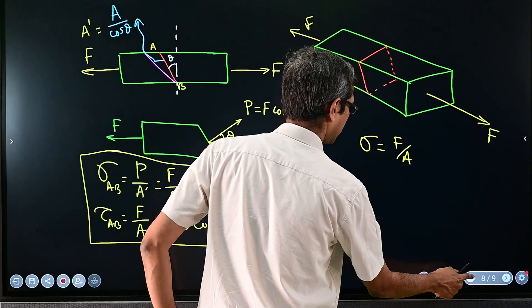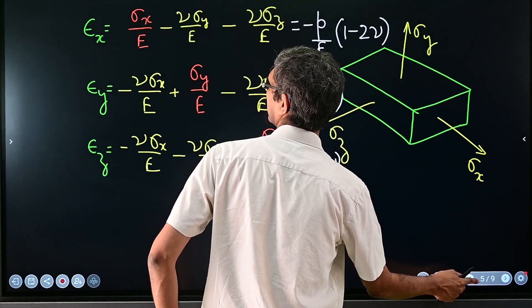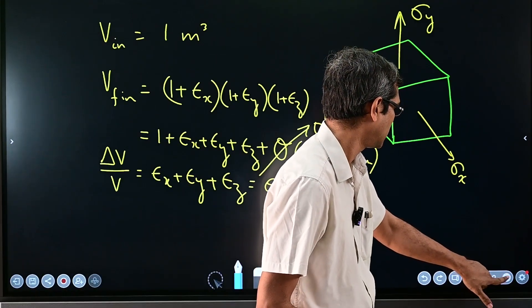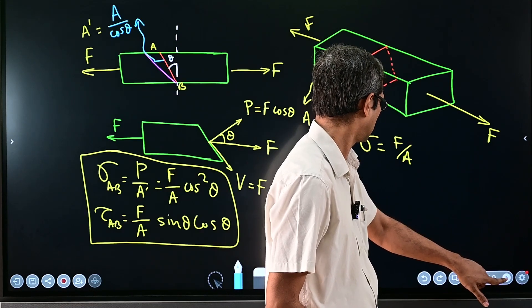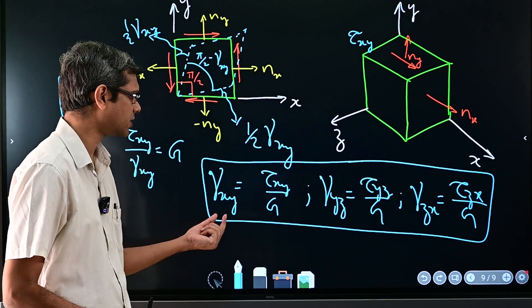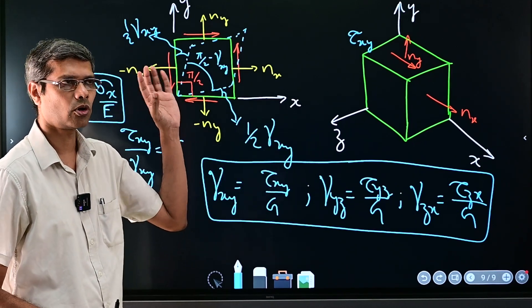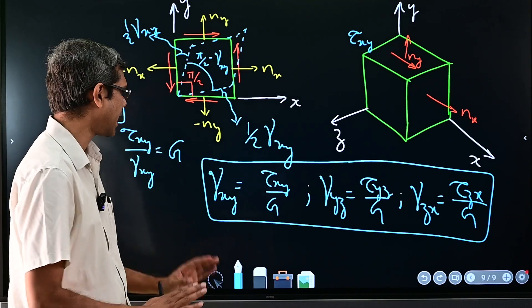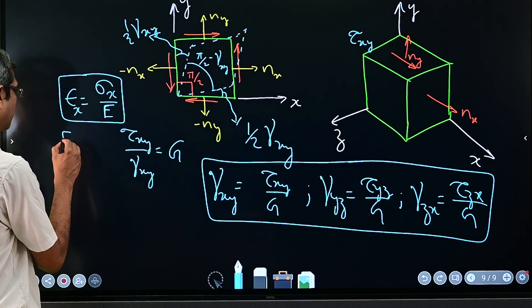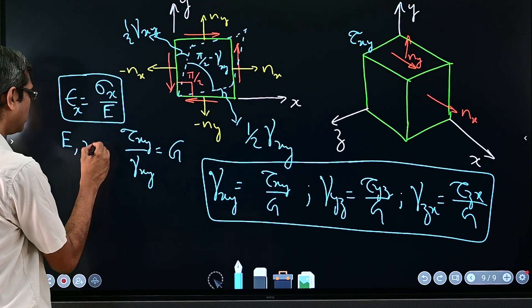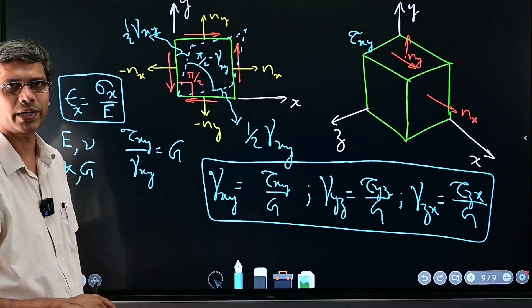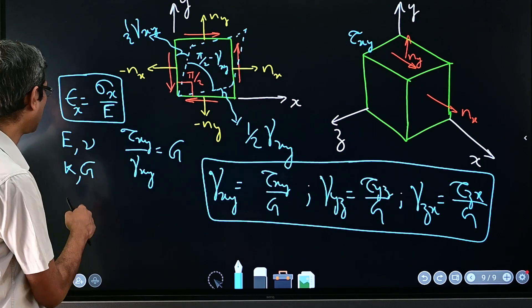These three, and along with these three—these are relationship between shear strain and shear stress, those were for normal strain to normal stress—and we have now how many constants? Till now we have studied E, then we studied nu, and then we defined k and now we define G.